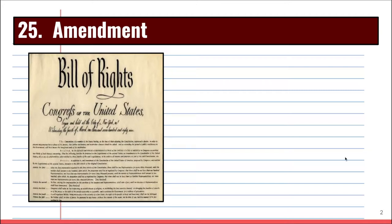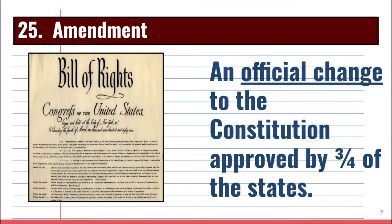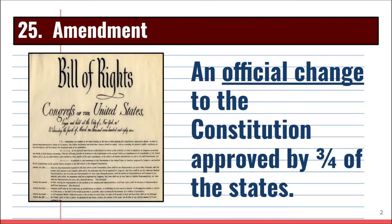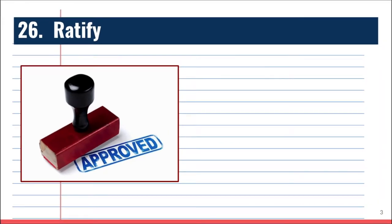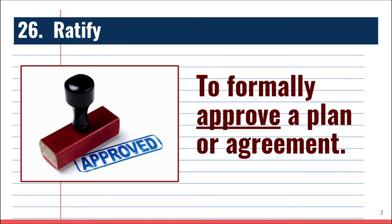Our first term is amendment. An amendment is an official change to the Constitution that is approved by three-quarters of the states, or 75% of the states, which must approve an amendment in order for a change to be added. Our second term is ratify, which means to approve. To ratify is to formally approve a plan or agreement.